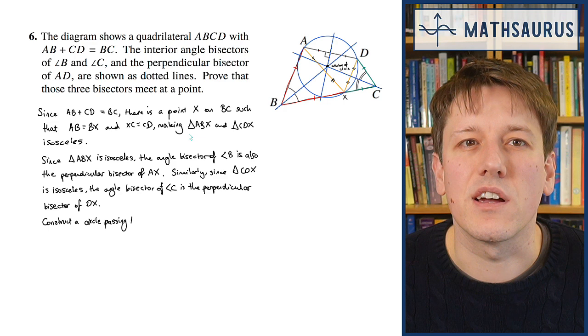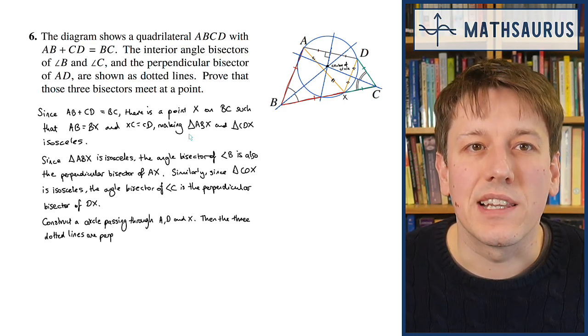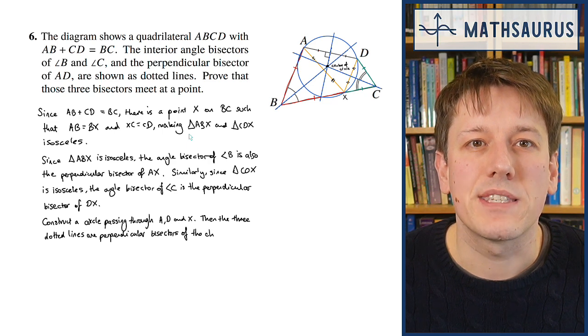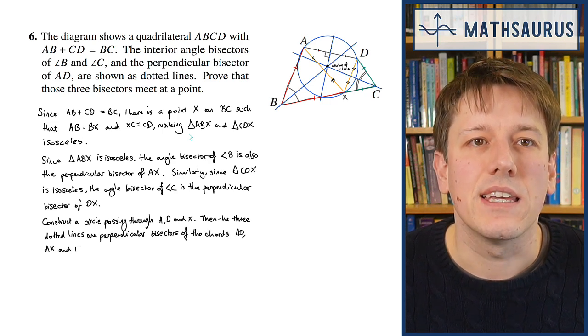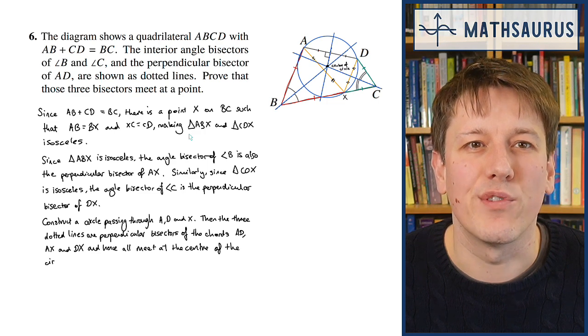If we construct a circle passing through the points A, D, and X, then the three dotted lines are perpendicular bisectors of the chords AD, AX, and DX, and hence all meet at the center of the circle.